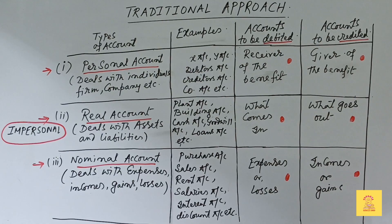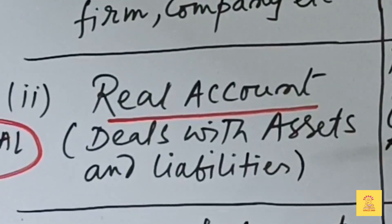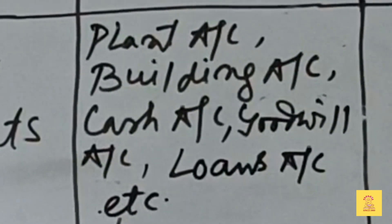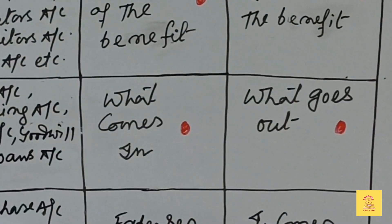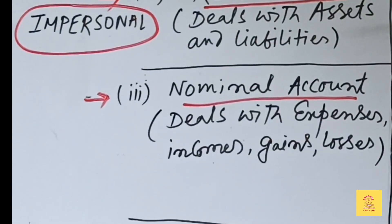Real account and nominal account are called impersonal accounts. Real account deals with assets and liabilities — for example, plant account, building account, cash account, goodwill account, and loans account. The rule for real accounts is: debit what comes in and credit what goes out.